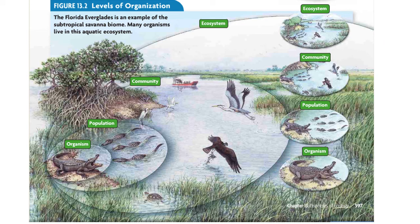In this picture you see an organism — an alligator all by himself — representing his species; you could also call it an individual. In the next picture we get into the population: we have several alligators, but they are all one species.